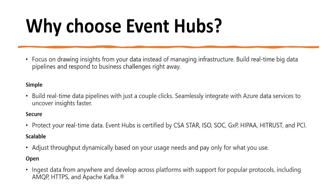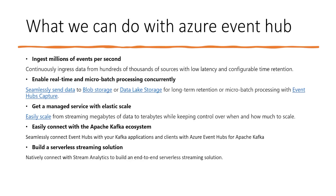Let's see what we can do with Azure Event Hub. We can ingest millions of events per second. We can enable real-time and micro-batch processing concurrently — for example, seamlessly sending data to Blob Storage in between, so you don't have to write various scalable services. We can use Event Hub's capture mechanism where data coming to Event Hub is saved into Blob or Data Lake Storage. This is a managed service with elastic scale, so we do not have to think about scaling.